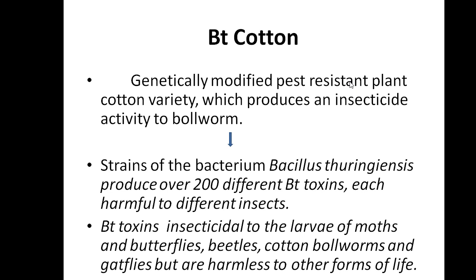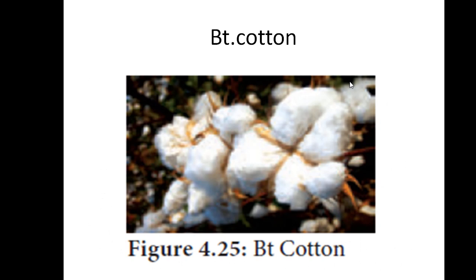Bacillus thuringiensis — BT toxin — gives different types of toxins, and those toxin-producing genes are incorporated into the cotton plant, so it is called BT cotton. That toxin produced by the bacterium can kill 200 harmful insects. BT toxin is insecticidal to larvae of moths and butterflies, beetles, cotton bollworms, and gnats flies. Importantly, it causes no harm to other life — our desired crop plant, the cotton plant, is not affected by this insecticide.